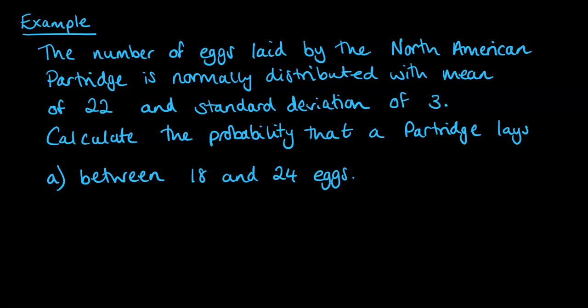Before we go on, let's just have a think about this though. The mean number of eggs, that is a discrete measure. But the normal distribution, that's continuous. So we have a little bit of discrepancy here.